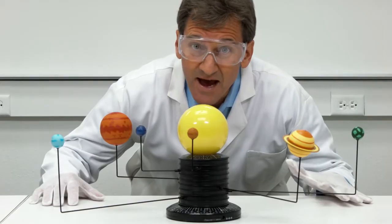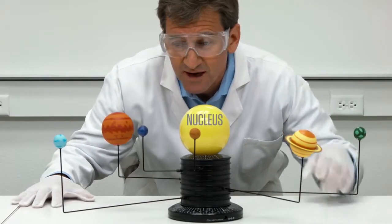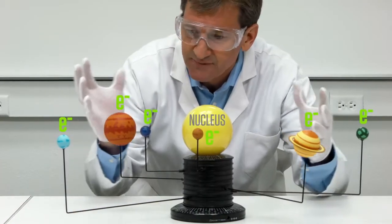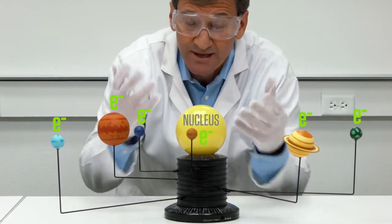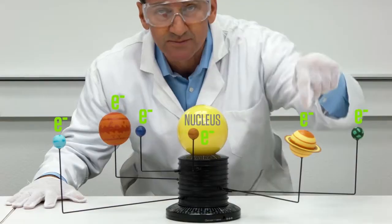In the center of every atom is a nucleus with a positive electrical charge. Around it are electrons with a negative charge. Positive and negative charges attract, and it's this electromagnetic force that holds the atom together, sort of like gravity holds planets in orbit around the sun.